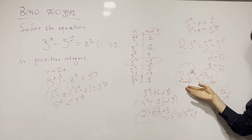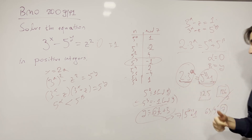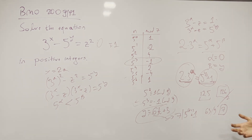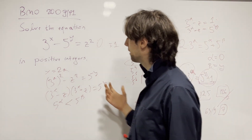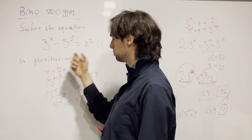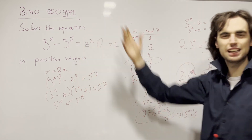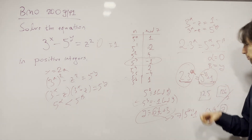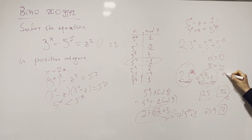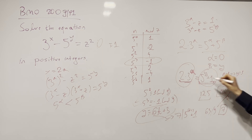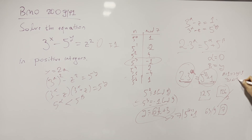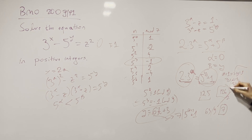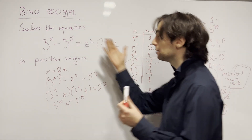This gives us that a ≥ 2 has no solution, which means a ≤ 1. For a = 0, we'd get z = 0, which is not a positive integer — so a = 0 is excluded. Therefore a = 1, which implies y = 1 and x = 2, and then z = 2. This is the only solution in the positive integers.